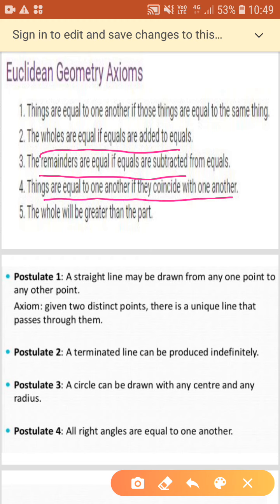Number four, things which are equal to one another if they coincide with one another. It gives the definition of congruent shapes that congruent shapes have exactly the same shape and same size and they coincide with one another. Naturally, the figures with the same shape and the same size will be exactly equal.